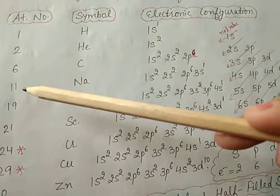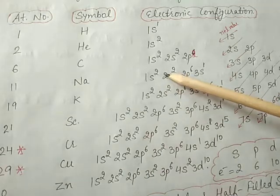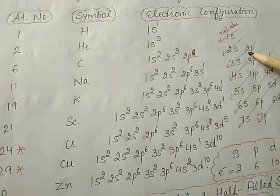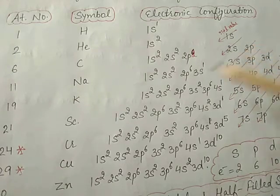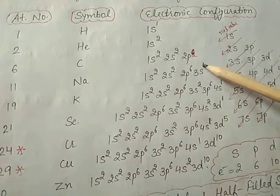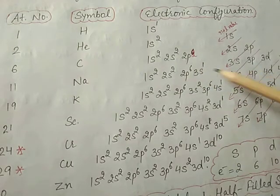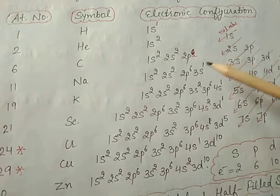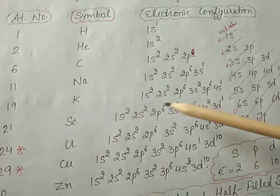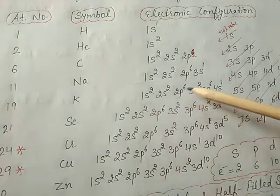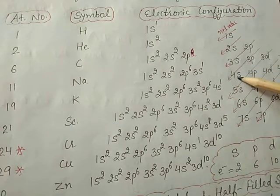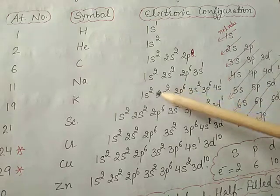Atomic number 11, sodium: 1s2 2s2 2p6 3s1, because after 2p the electron goes to the 3s orbital. That is 2+2+6=10, then only one is left which goes to 3s. Atomic number 19, potassium K: 1s2 2s2 2p6 3s2 3p6 4s1, because 2+2+4+6+2+6=18, plus 1 = 19.